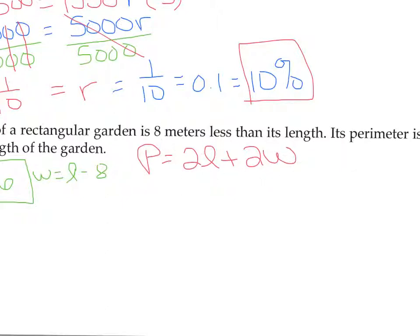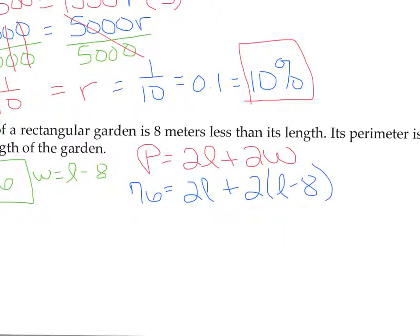We use the information to get rid of as many variables as we can. We know the perimeter is 76, so we replace P. We don't know the length, so we leave L in. We do know the width equals length minus 8, so we replace W with (L minus 8), using parentheses because it's being multiplied by 2. Now we have only one variable left, which is L, and we can solve for it.